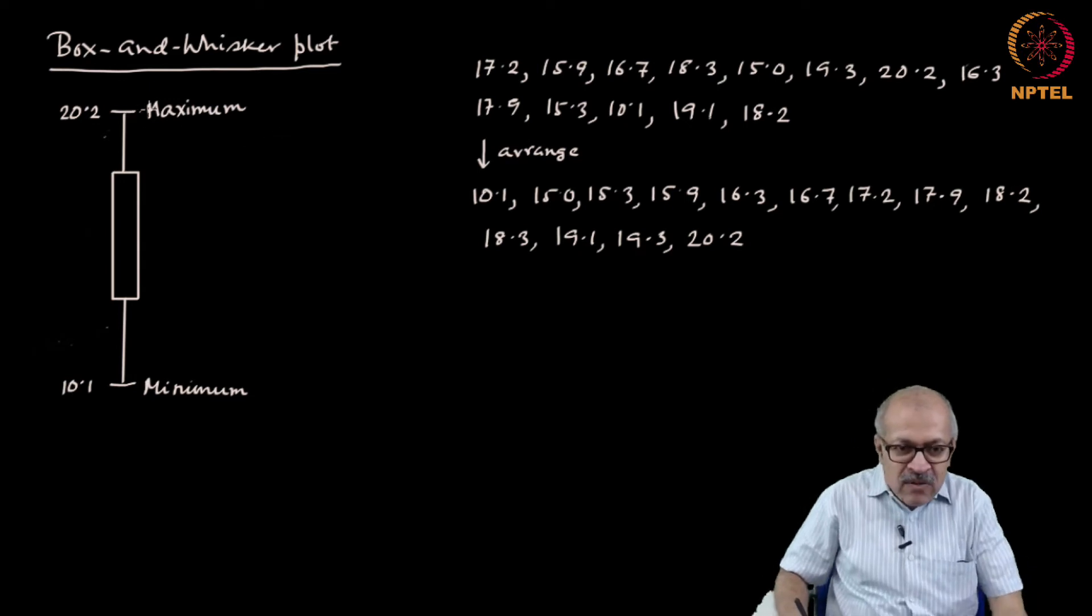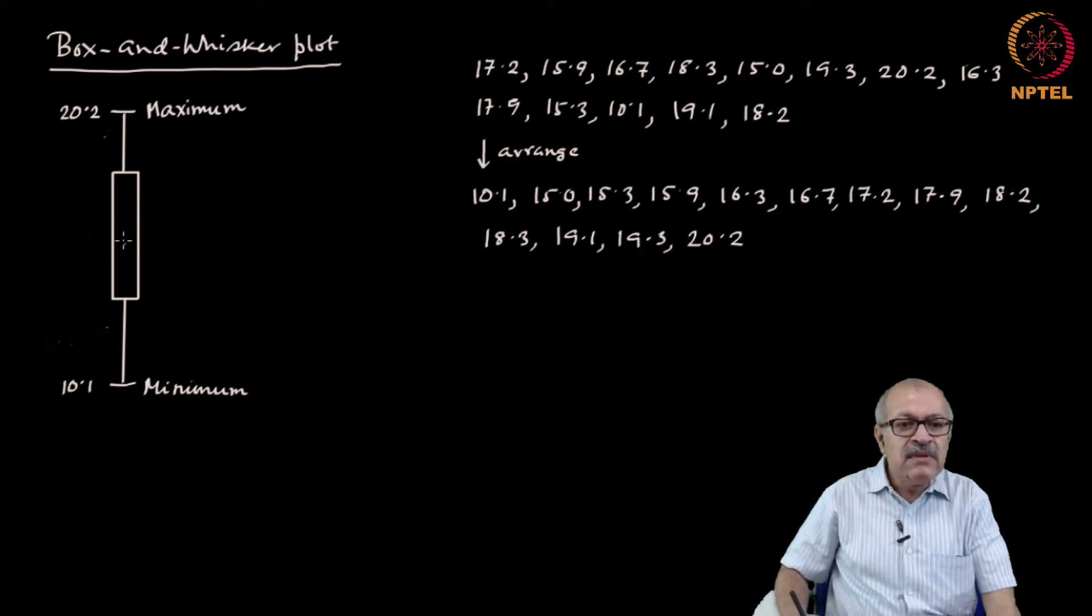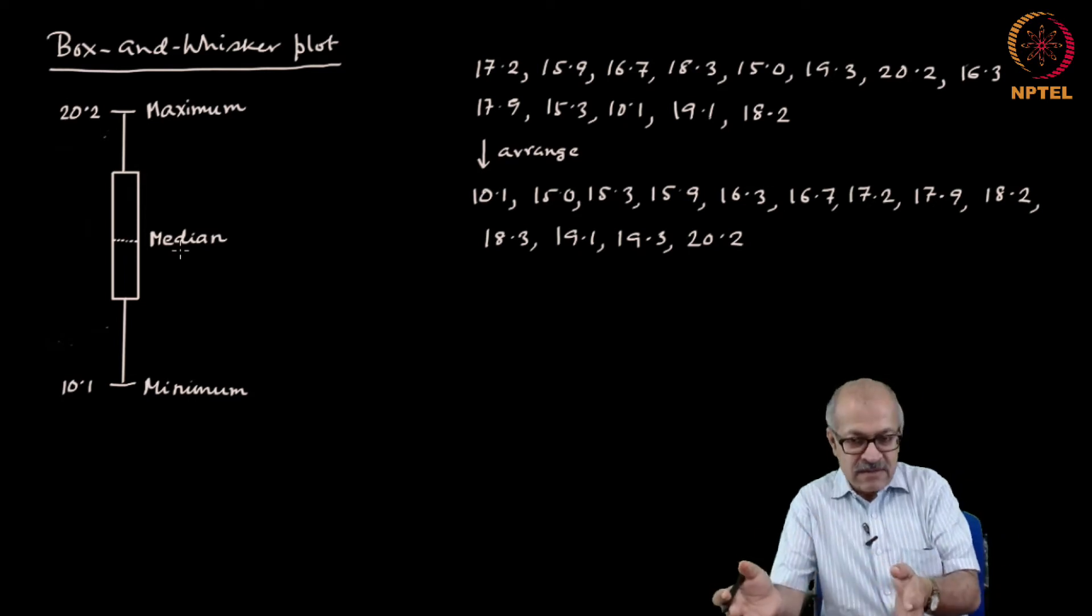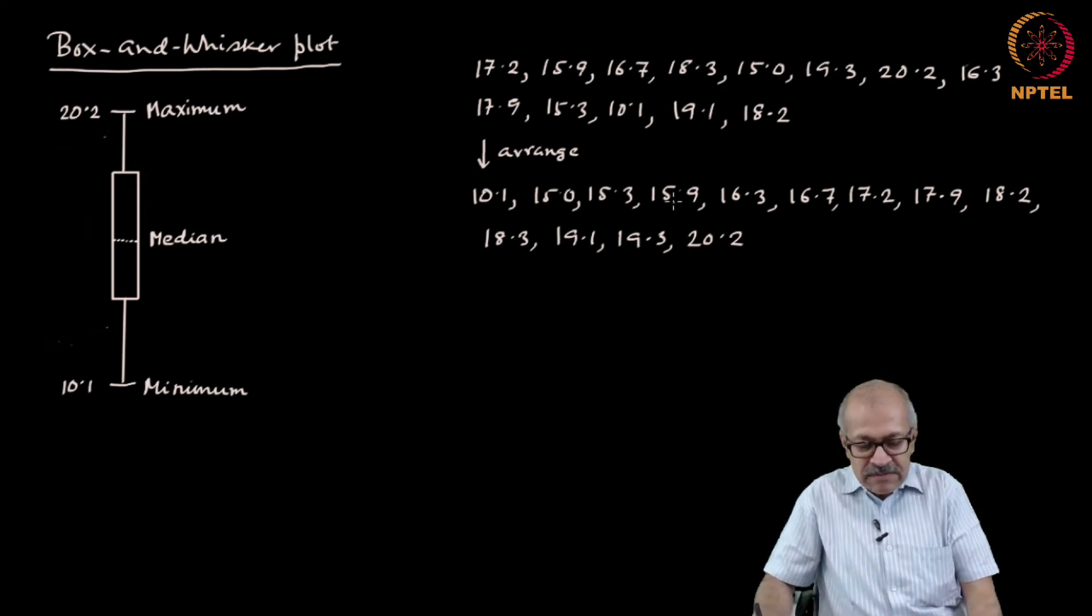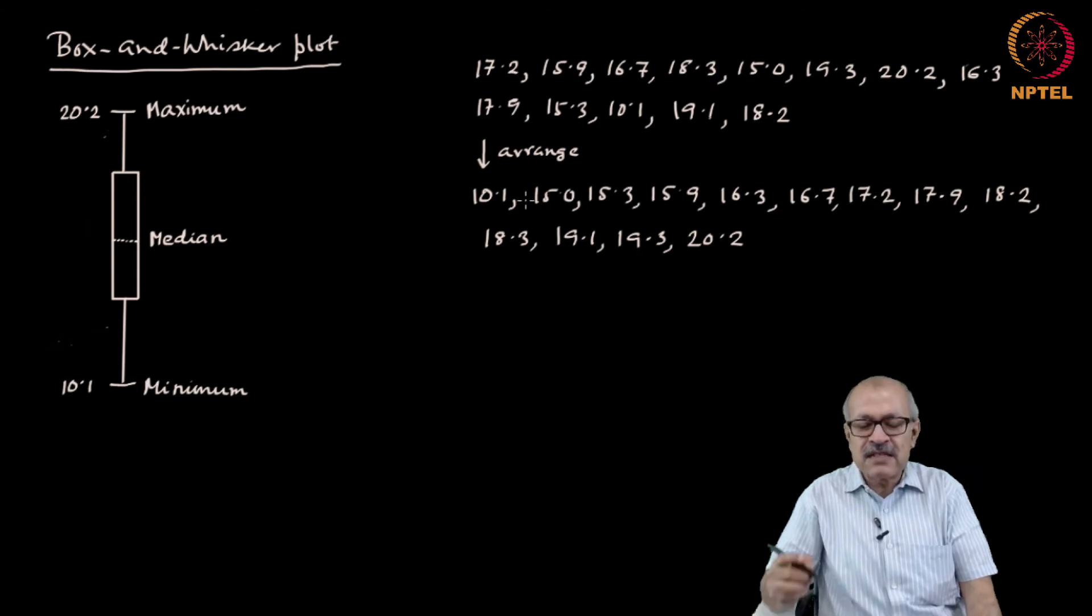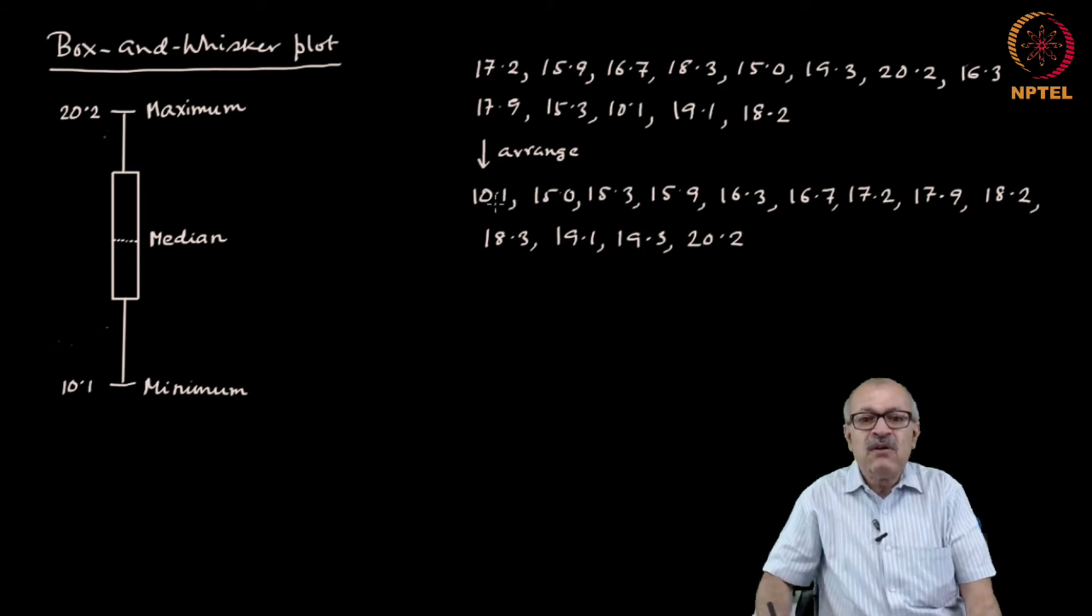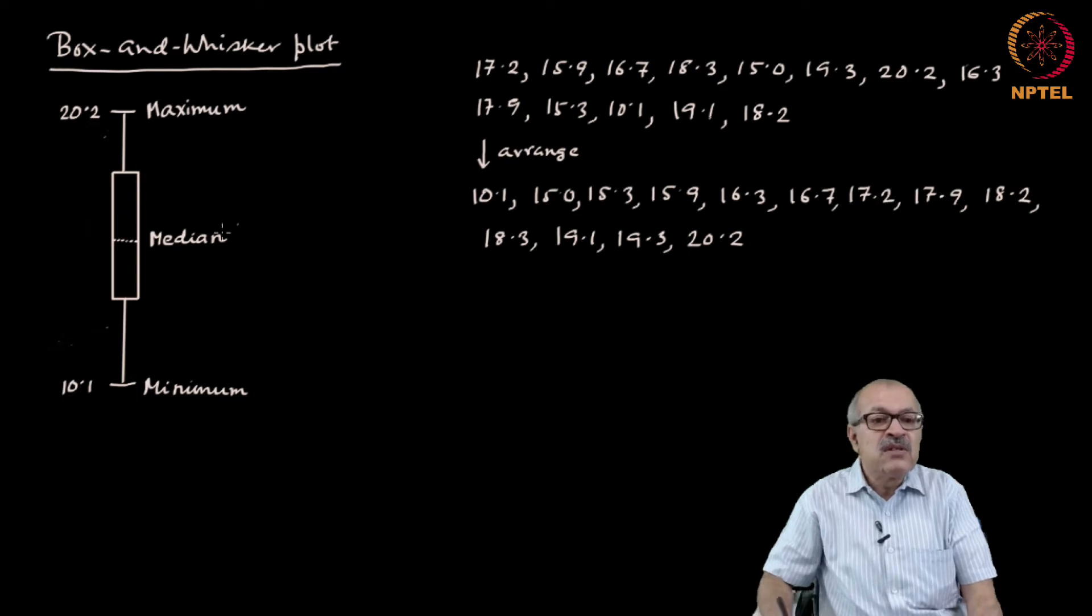Now, in between the minimum and the maximum there would be a particular value which is the median value, not the mean, the median value. The median value is the middle value of the data set. Now, there are 13 data points. Therefore, the middle value is the 7th data point, which is 1, 2, 3, 4, 5, 6, 7: 17.2. So, 17.2 is the median value.